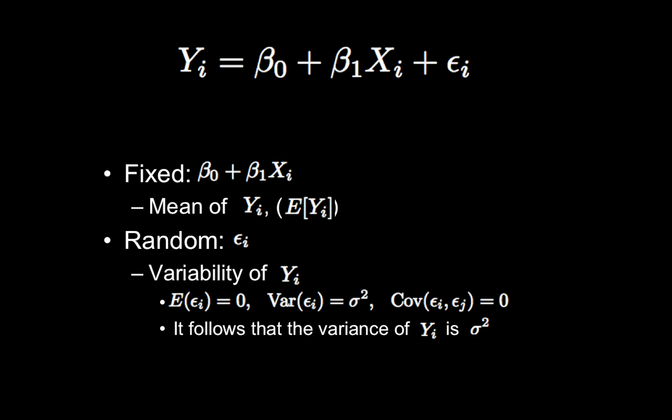The error term is the random component, so it's random because this is where the variance is described. We assume the errors have a mean of zero, so the expected value is zero, and we assume the variance is the same for each subject.